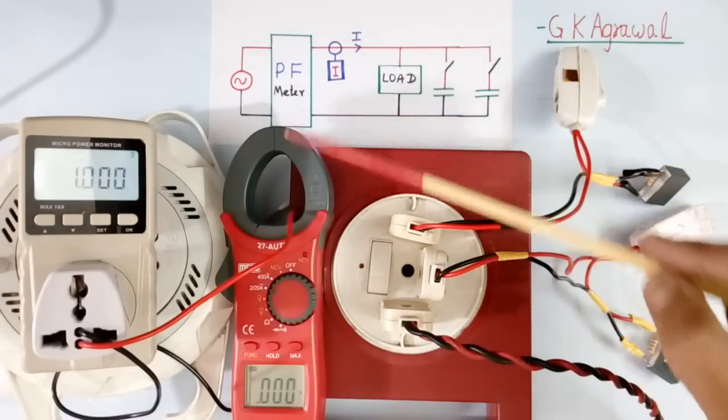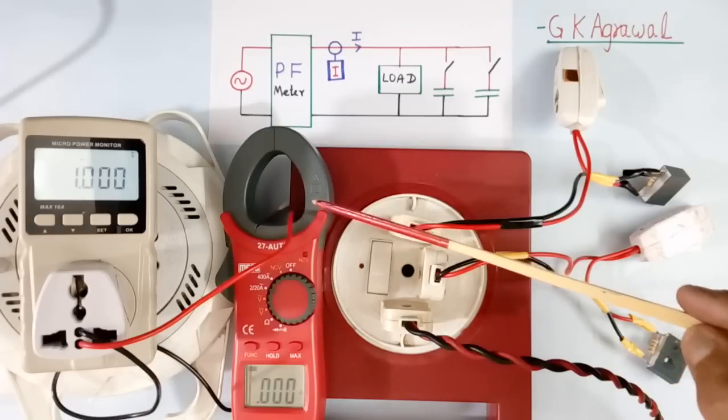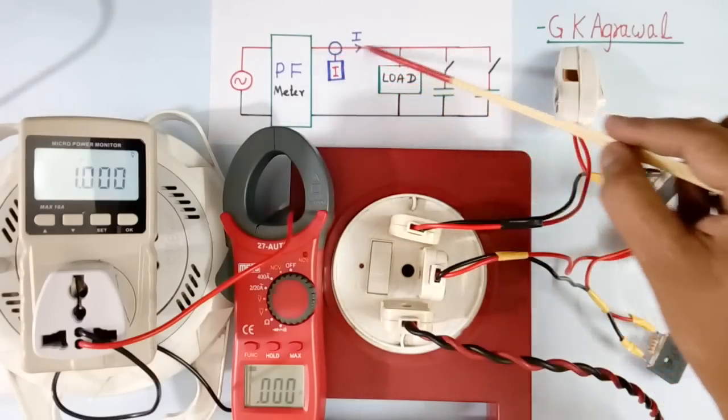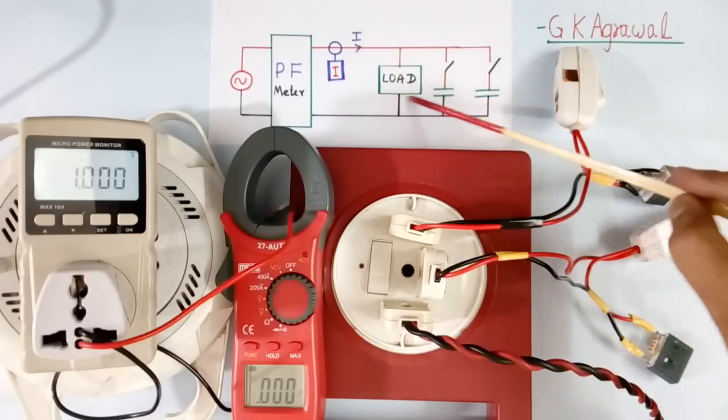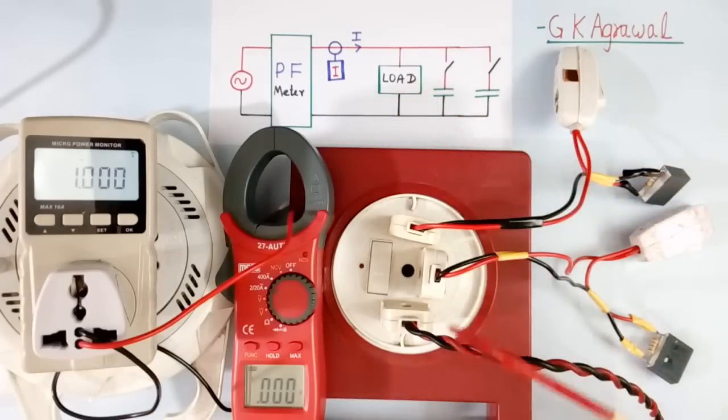Here I have connected one clamp meter which will measure the current flowing in this wire. And this is load. I have 4 types of load. All 4 loads I will show you.